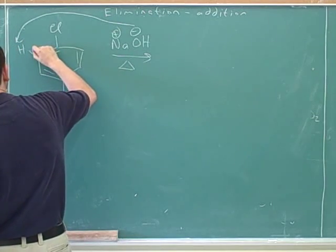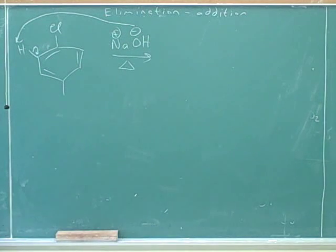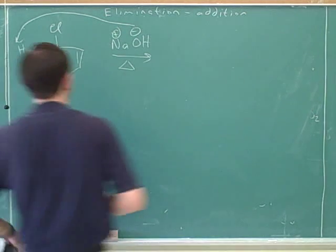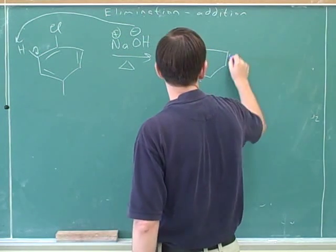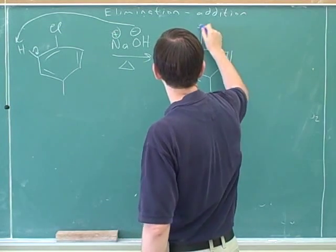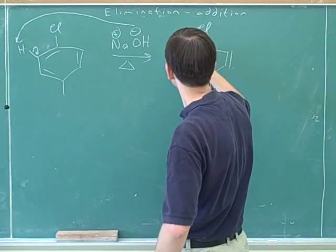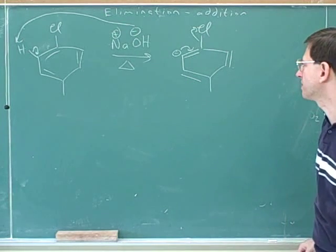Actually, I made a mistake — the electrons initially have to go here. The benzyne is formed because it pushes off the chlorine. So this is a two-step elimination.